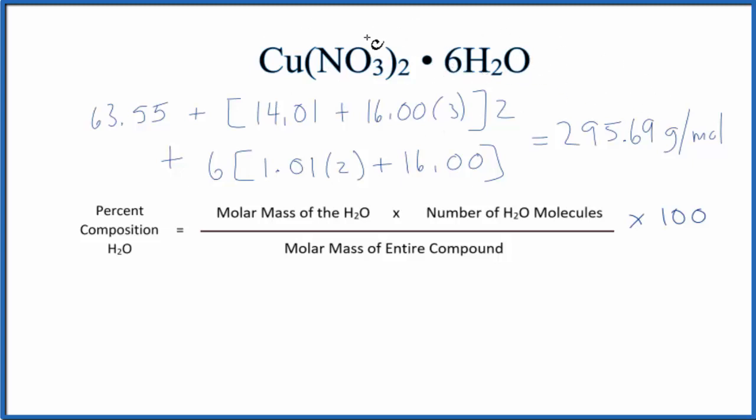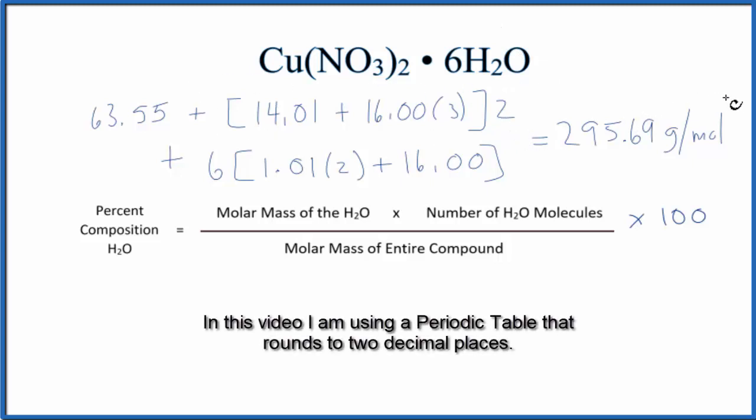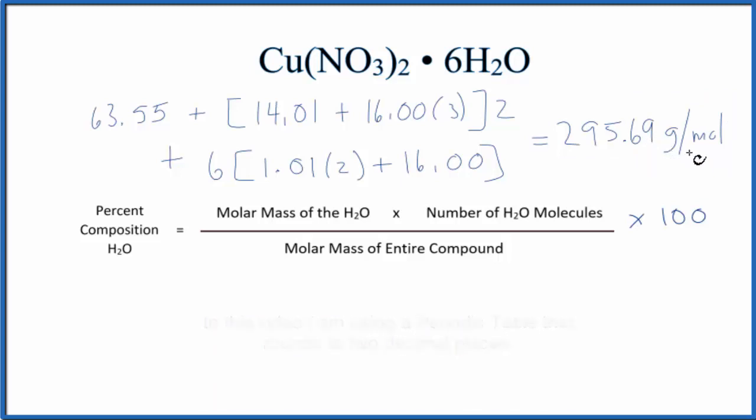The first thing we'll do is find the molar mass for the entire compound. We'll find the molar mass for the copper 2 nitrate and the six water molecules and add those together. When we do that, we end up with a molar mass of 295.69 grams per mole for this entire compound.